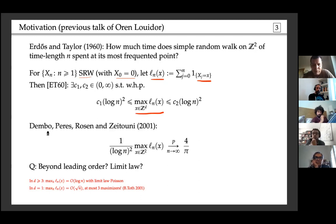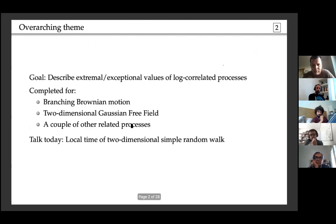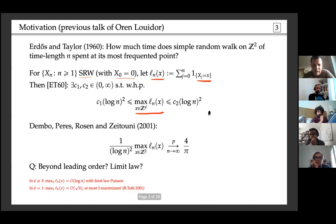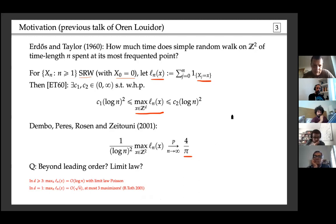It then took 40 years to derive the asymptotic value. If you scale the maximum by (log n)², this converges almost surely to a constant, which in this normalization is 4/π.